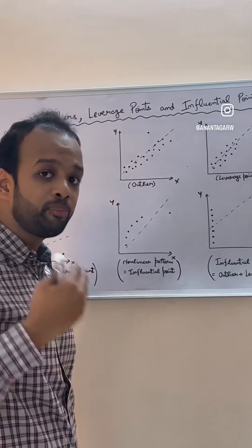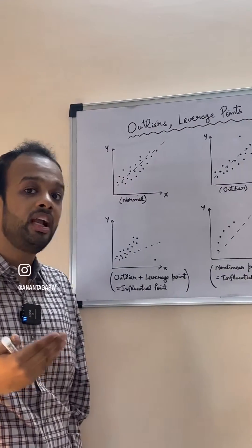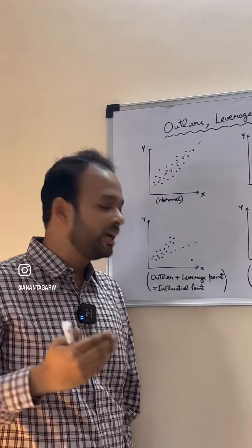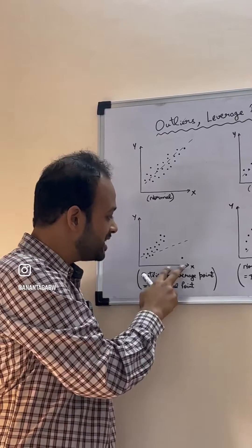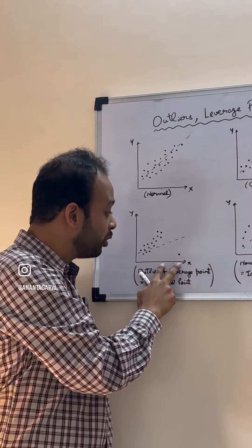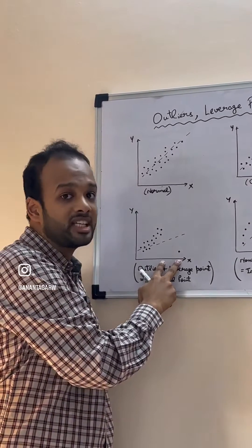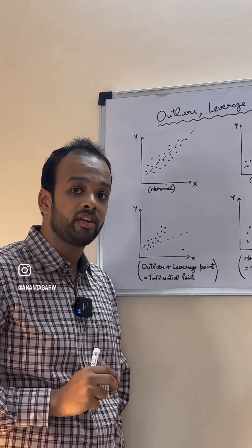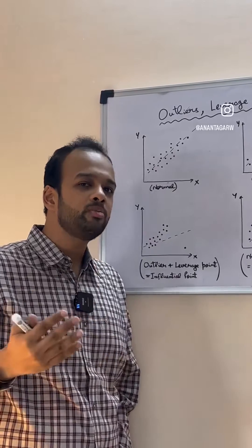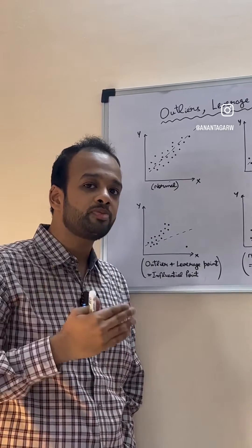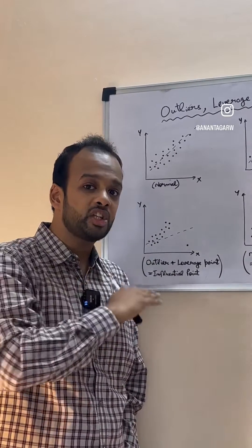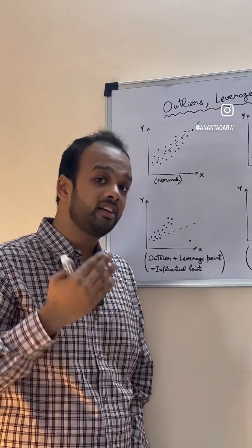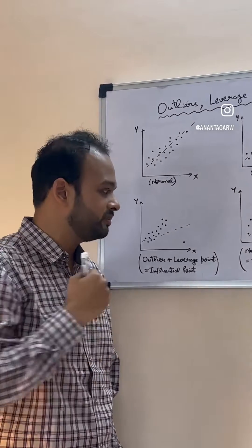Now, a point can have a high residual and it can have a high x value. In this case, you can see both of these conditions are satisfied, and that's why this point is called an influential point. What it also means is if you remove this point, the regression line will change a lot — meaning it's influencing the regression line a lot.